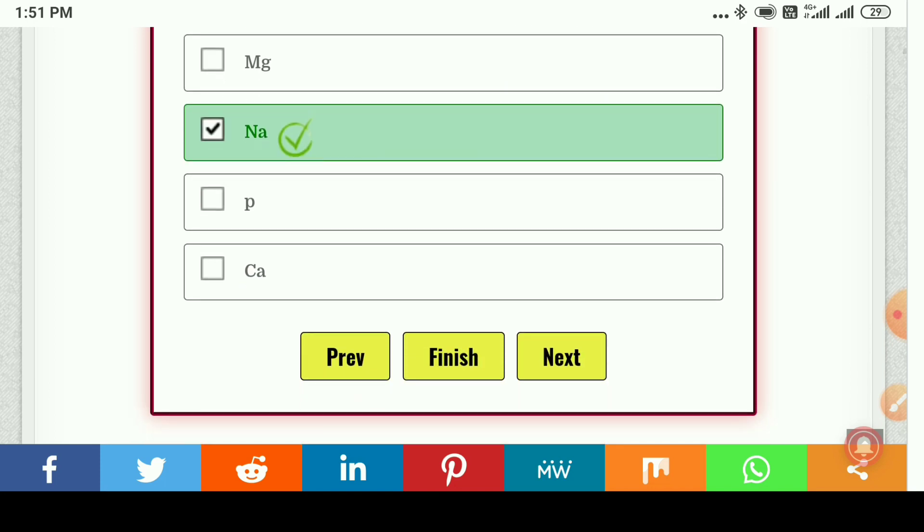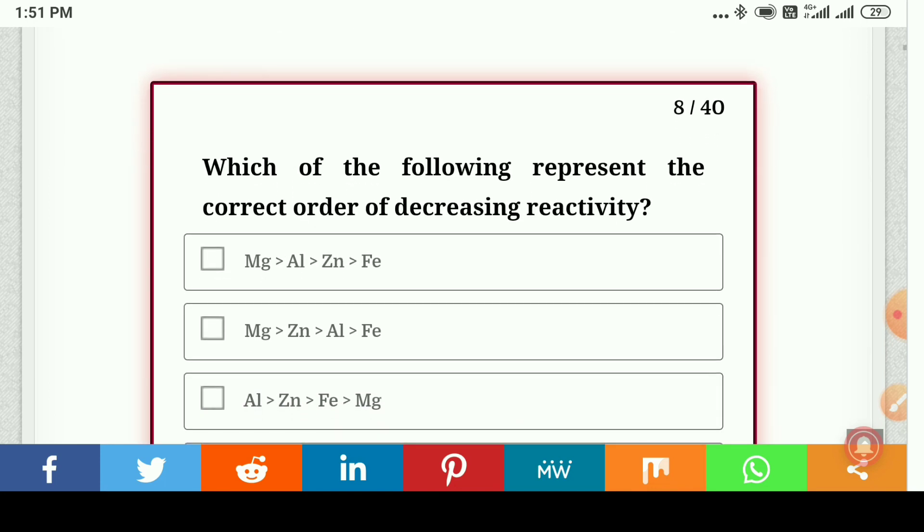Which of the following represent the correct order of decreasing reactivity: magnesium, aluminum, zinc, and iron?